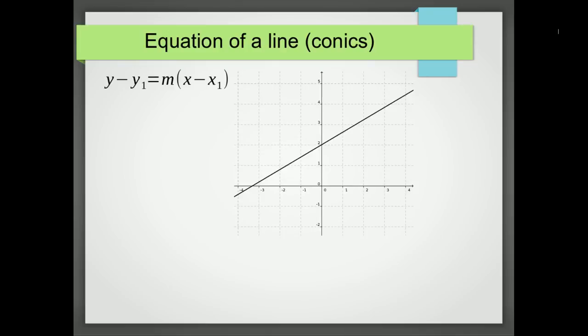In this video, we're going to look at how to find the equation of a line. To find the equation of a line in Cartesian form, that means in terms of x and y, the easiest thing to do is to use the equation y minus y1 equals m times x minus x1.